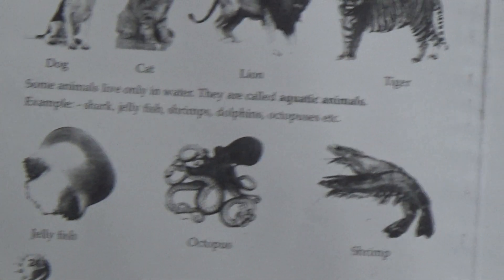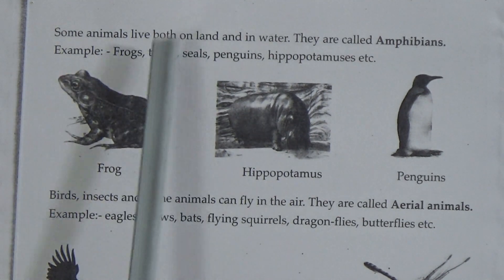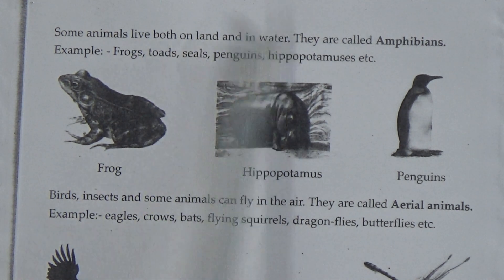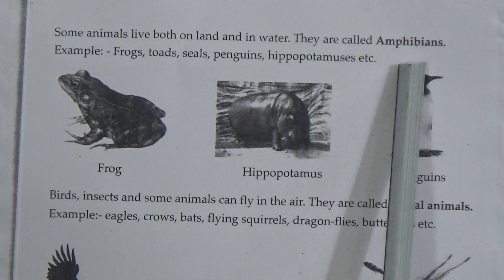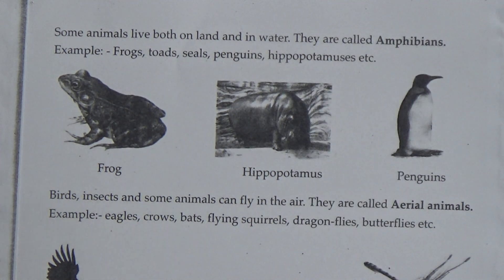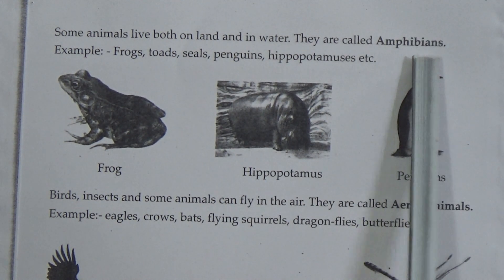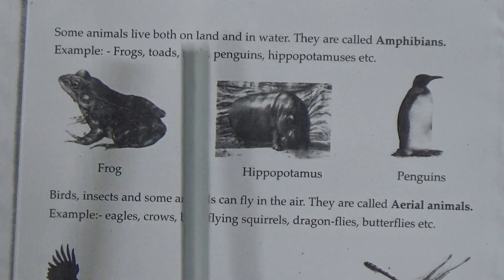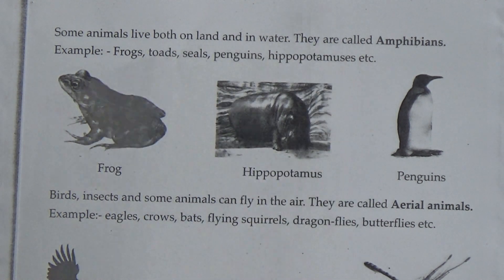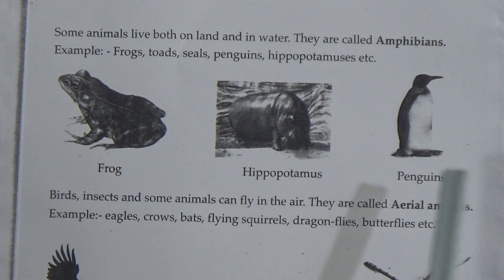Now come to page 25. Some animals live both on land and in water. They are called amphibians. Amphibian spelling is A-M-P-H-I-B-I-A-N-S. Examples here are frogs, toads, seals, penguins, hippopotamus, etc. And here are pictures of frog, hippopotamus, penguins.